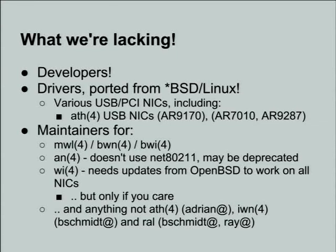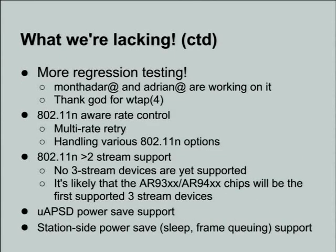If someone cares about Lucent Prism 11 megabit - the old gold and silver PC cards - please come and speak to me. I know what's wrong with it, I just don't want to fix it. The NICs that are basically well looked after if you want to use 11N or any other wireless on FreeBSD are Atheros, the Intel NICs, and the RALink NICs. We're working on regression testing especially with the software simulator - using it for 11s testing. In the future we're going to start supporting AP mode, station mode, IBSS mode, and TDMA mode so we can test the stack's behavior for all of this.